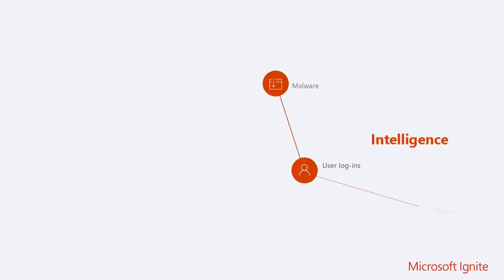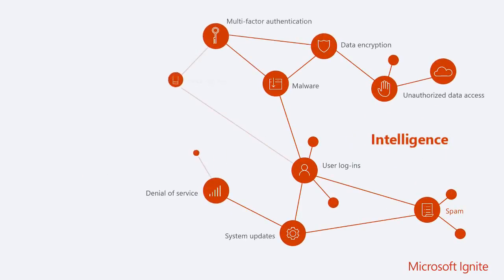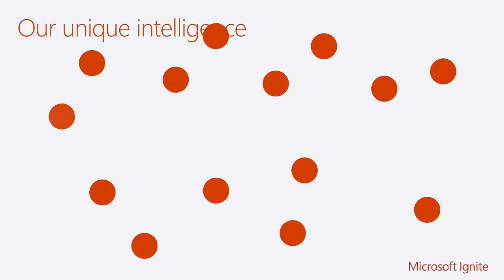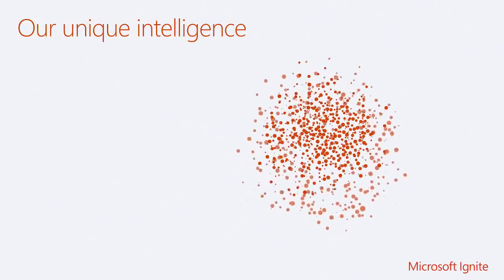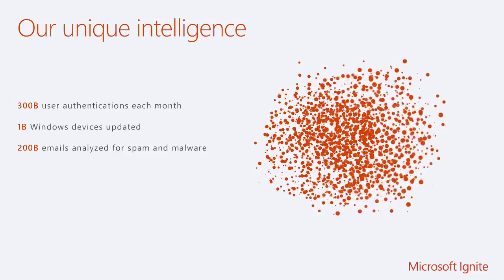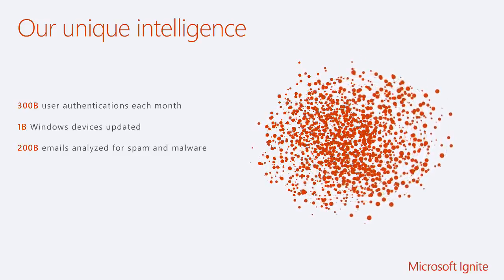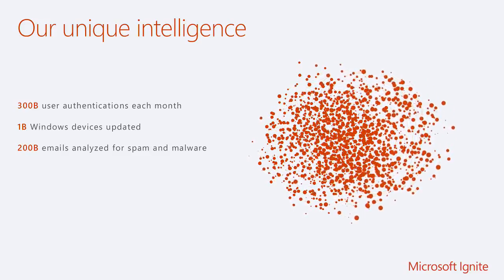In terms of intelligence, I wanted to mention this idea of the intelligence security graph. Because we have all of those signals available to us through platform control, we get exposed to a lot of different things - information on unauthorized data access, malware, antivirus, viruses, spam, and those sorts of things coming through the services. We're talking about 300 billion user authentications each month, so when we're looking at suspicious logons or suspicious activity, 300 billion authentications a month is a pretty good data set to learn from.